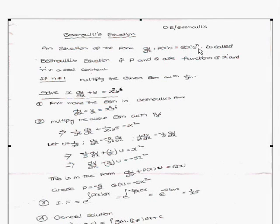The main concept behind Bernoulli's equation is the form dy/dx + p(x)·y = q(x)·yⁿ. First, convert the problem into standard Bernoulli form. Then multiply the equation by 1/yⁿ, which converts it into a linear differential equation. After that, adopt the same procedure used for linear differential equations.